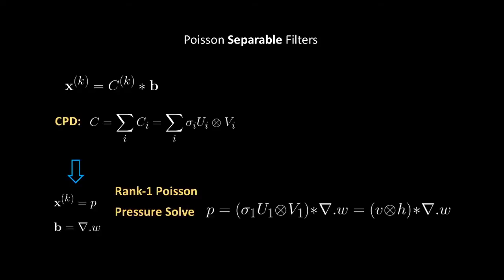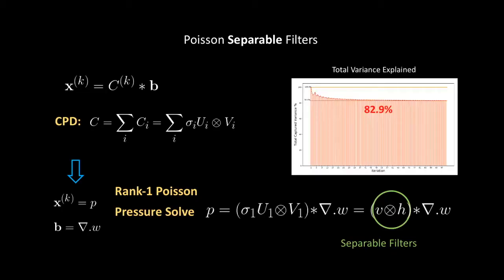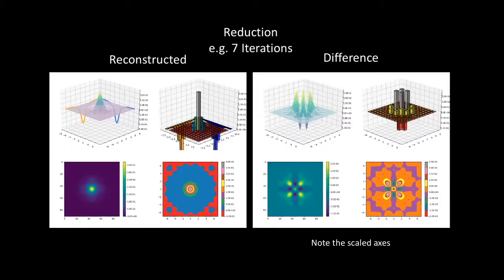Back to our equation, we perform CPD, plug-in pressure and divergence, and we get our rank 1 Poisson pressure equation with the vertical and horizontal convolutional filters. And if you look at the total variance explained by our filters, they plot pretty much on about 83% as the iteration goes to infinity, which is quite sufficient as you will see in the results. Here is the reconstruction of the kernel using the filters they just saw, and also you can see the difference, which is quite small if you look at the scale.